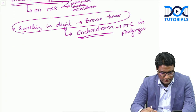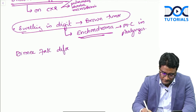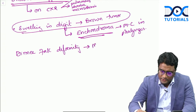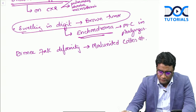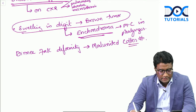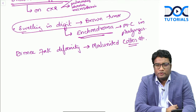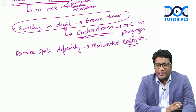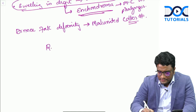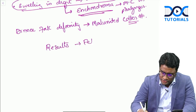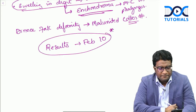A question on dinner fork deformity was also mentioned - this is malunited Colles fracture, which gives an inner fork or dorsal displacement deformity. Most of the questions were pretty much doable. Take a much-needed break, relax with your families and friends, and hopefully most of you will have good results. The results date is around February 10th. God bless you, and have a good result.